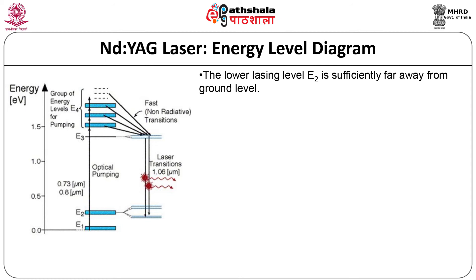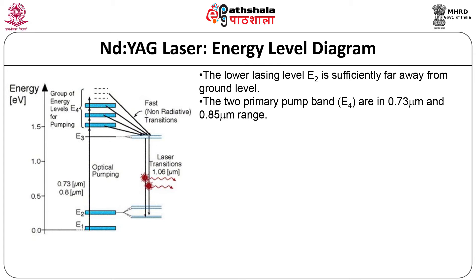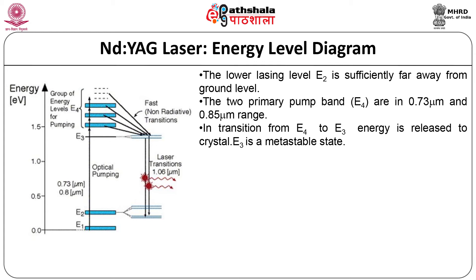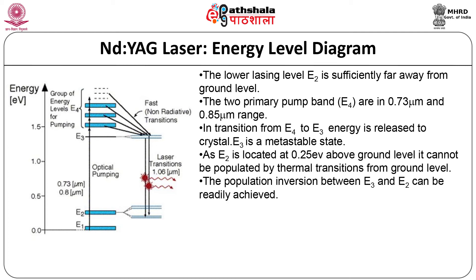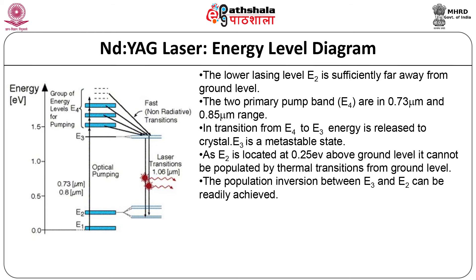In the energy level diagram of Nd:YAG laser, the lower lasing level E2 is sufficiently far from the ground level. The two primary pump bands E4 are in the 0.73 µm and 0.85 µm range. In the transition from E4 to E3, energy is released to the crystal. E3 is a metastable state. As E2 is located at 0.25 eV above the ground level, it cannot be populated by thermal transitions from ground level. The population inversion between E3 and E2 is readily achieved. From E3 to E2, Nd³⁺ ions are stimulated to emit at the wavelength of 1.064 µm. From E2 to ground, Nd ions drop by fast non-radiative transition.